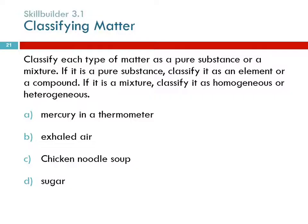The mercury in a thermometer — that's a pure substance. Is it an element or a compound? It's an element. Mercury was one of the element names to memorize; it's on the periodic table. If they're asking you about something that's on the periodic table, it's an element. That's a pure substance — it's an element.